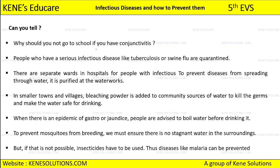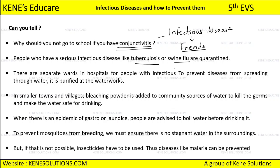Why should you not go to school if you have conjunctivitis? Because it is an infectious disease, and your friends might also get it. People who have a serious infection like tuberculosis or swine flu are quarantined — they must stay separate from family members to prevent rapid spread. Hospitals have separate wards for people with infectious diseases like tuberculosis, swine flu, and COVID.